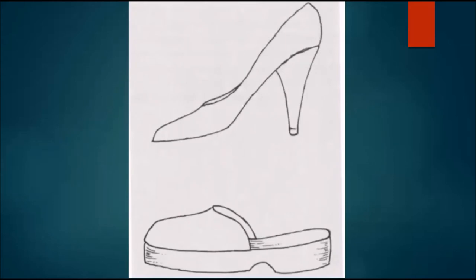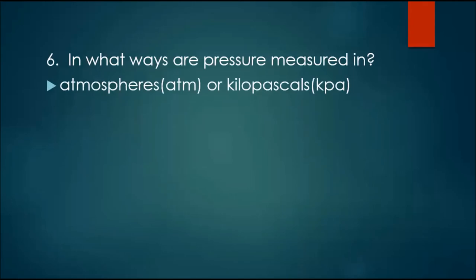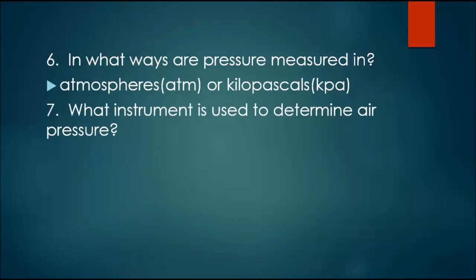Here's another one. Both of these shoes weigh the same, ladies. Which one would you use on a young man's crotch if he tries to be fresh with you? Which heel? The high heel. Why? They weigh the same. They can apply the same push. But with the high heel, you're putting all of that push in a tiny little area. So, this can exert the greatest pressure. In what ways are pressure measured in? Atmospheres and kilopascals. The instrument that we use to measure pressure is called the barometer. Barometer. Speaking of meteorologists.